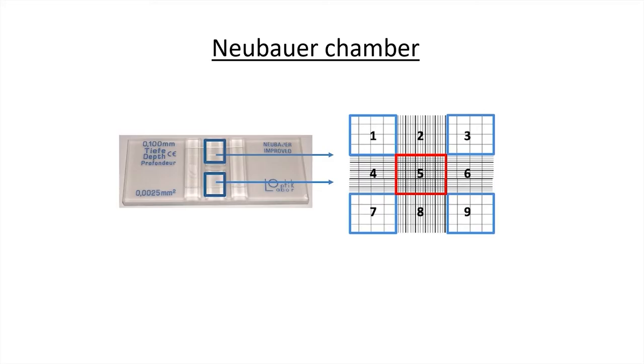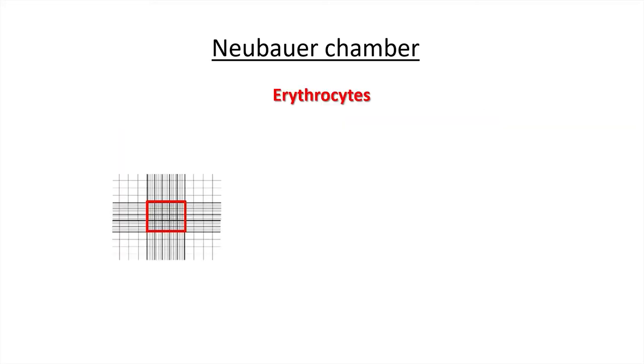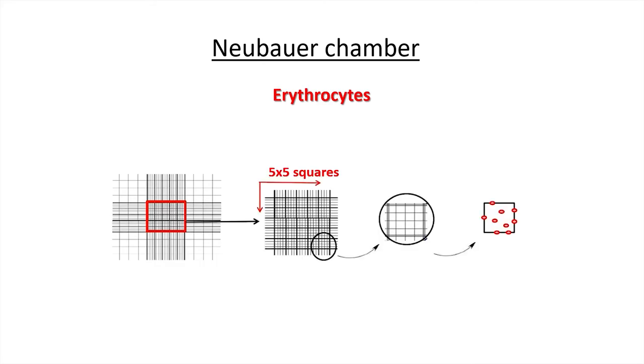The central square is where the erythrocytes or red blood cells are counted. It is a square of five by five squares, each divided into 16 small squares.